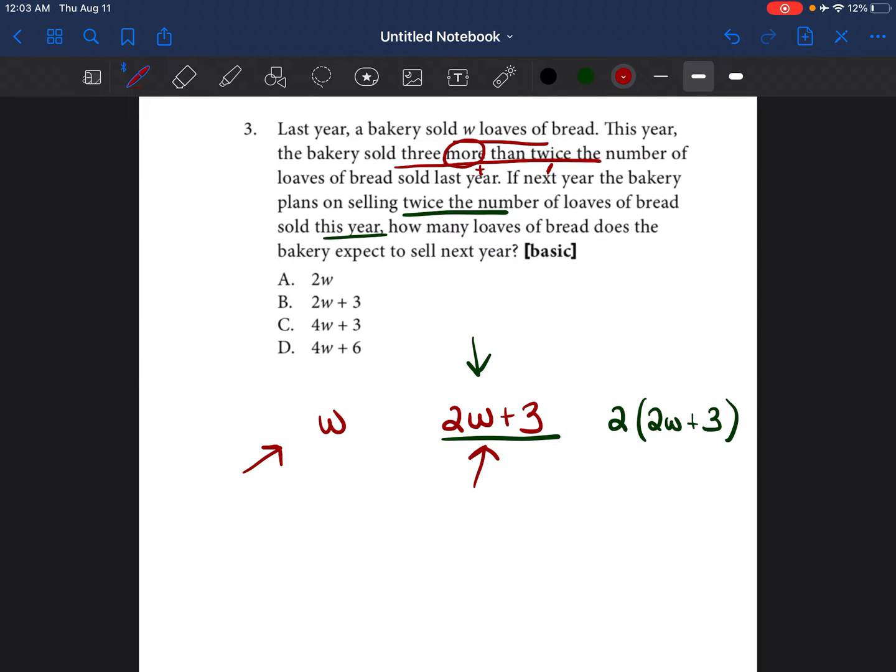We're going to go ahead and distribute that two. So we go two times 2W, which is 4W, and then two times three, which is six. So the answer will be 4W plus 6, which is D.